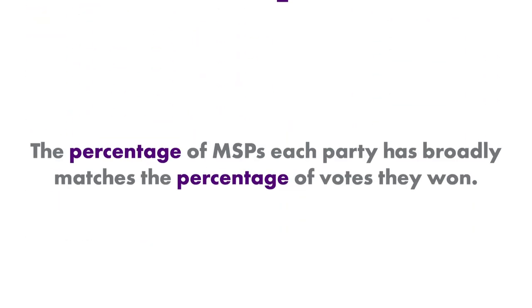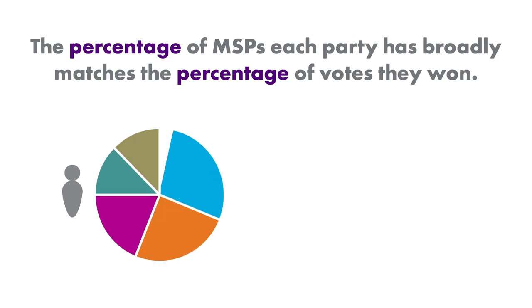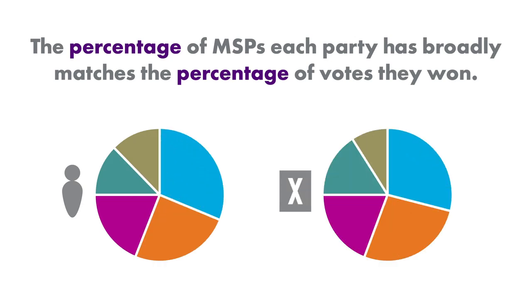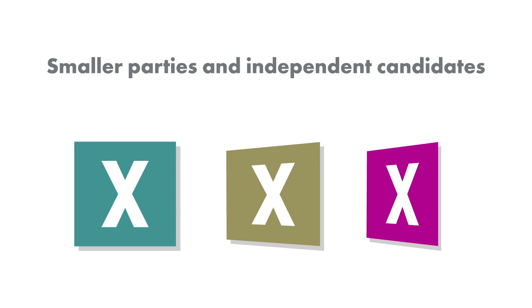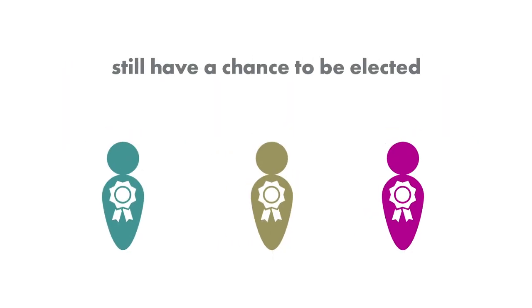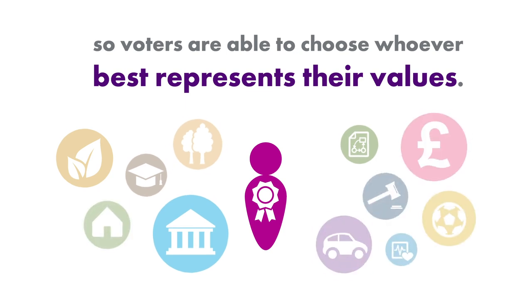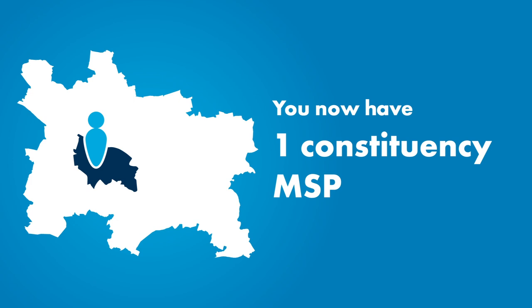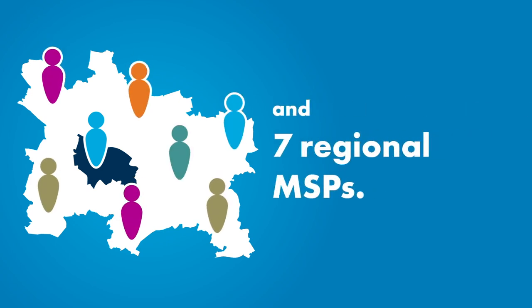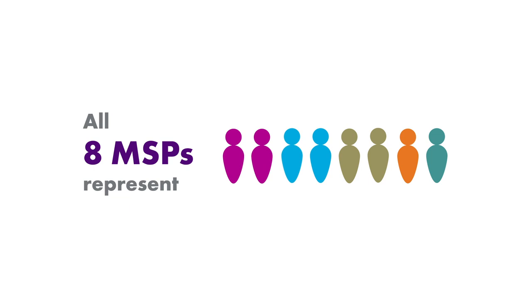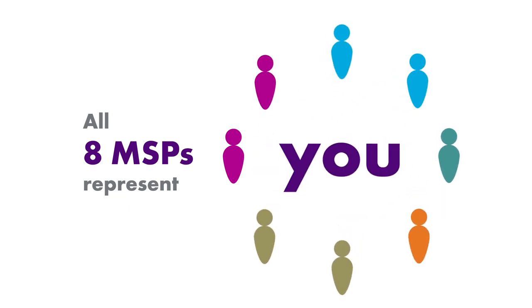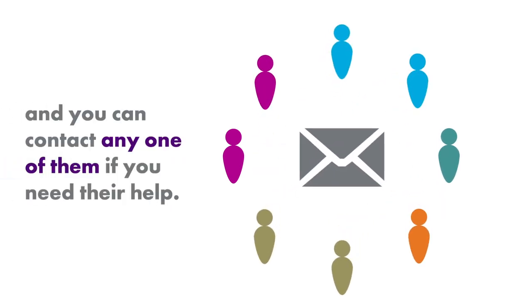Still with us? We hope so! The percentage of MSPs each party has broadly matches the percentage of votes they won. Smaller parties and independent candidates still have a chance to be elected. So voters are able to choose whoever best represents their values. You now have one constituency MSP and seven regional MSPs. All eight MSPs represent you, and you can contact any one of them if you need their help.